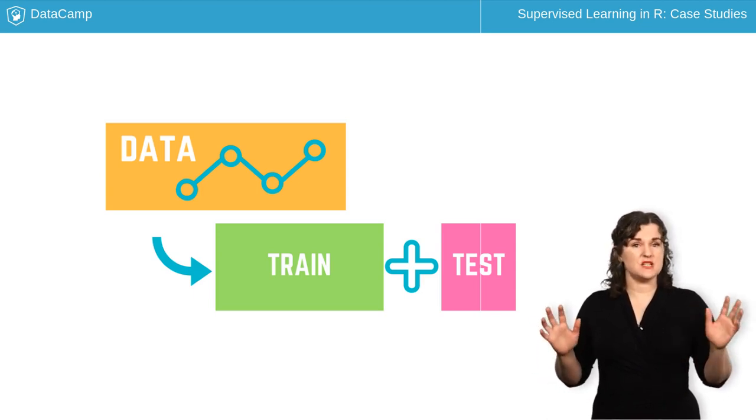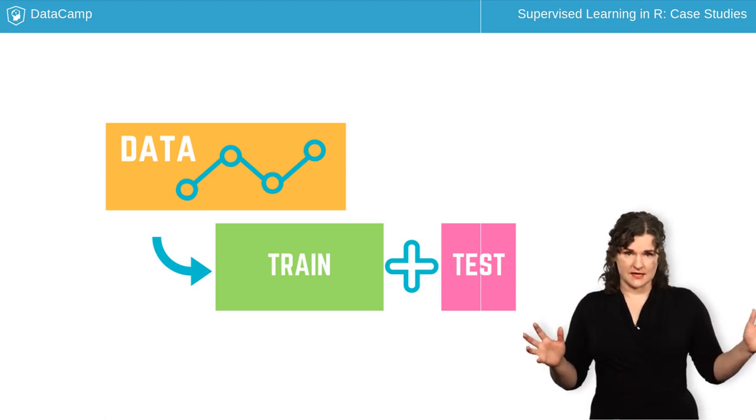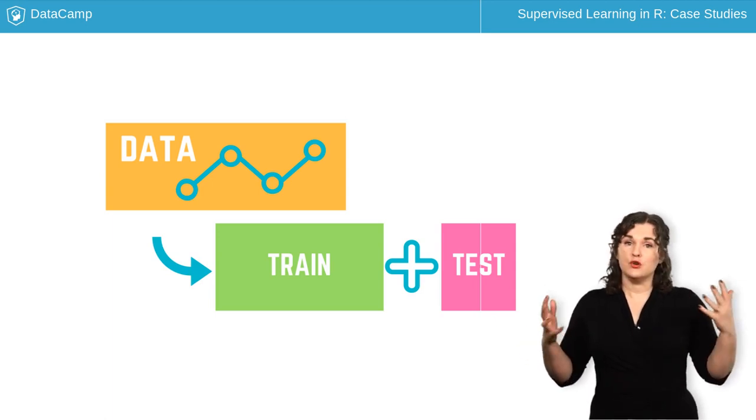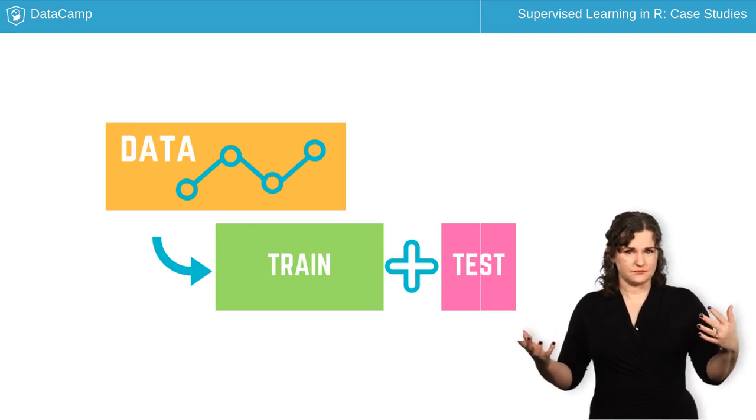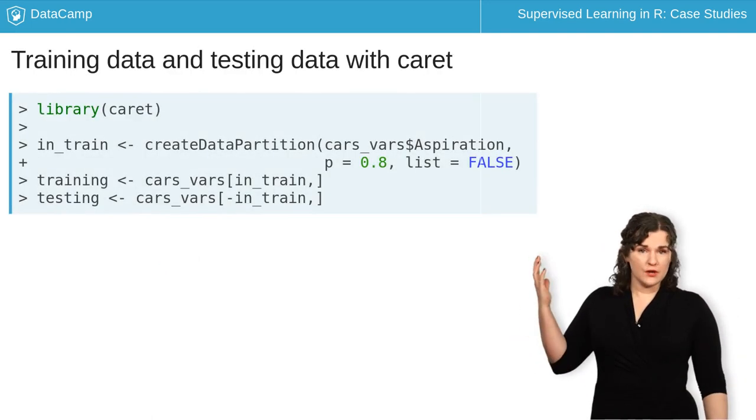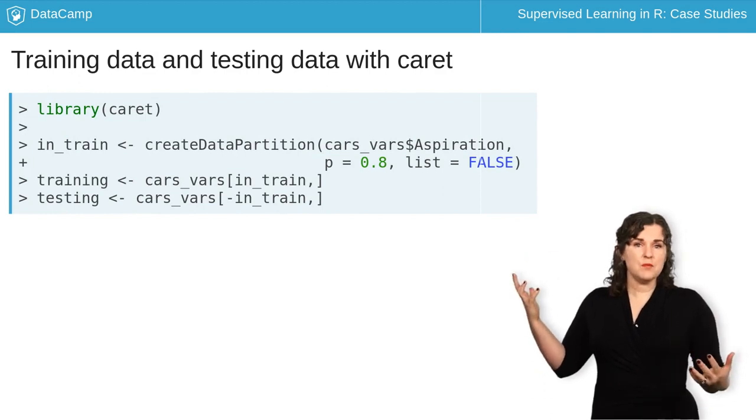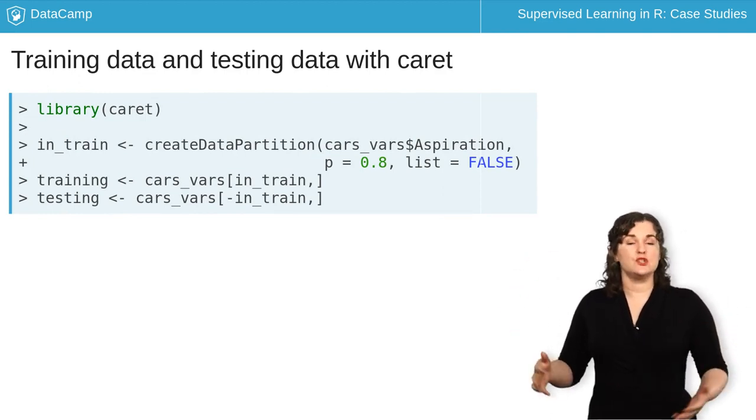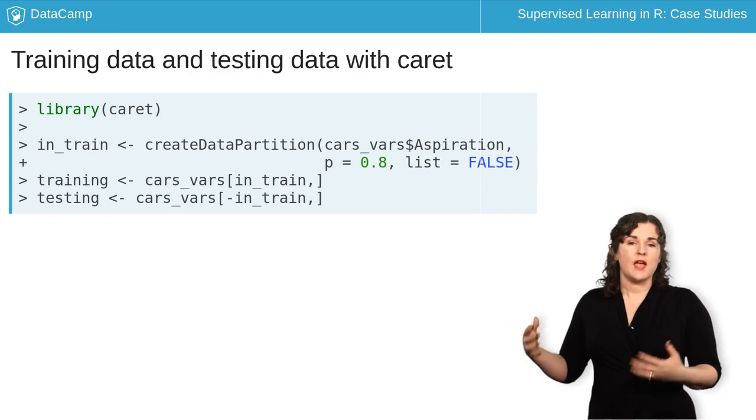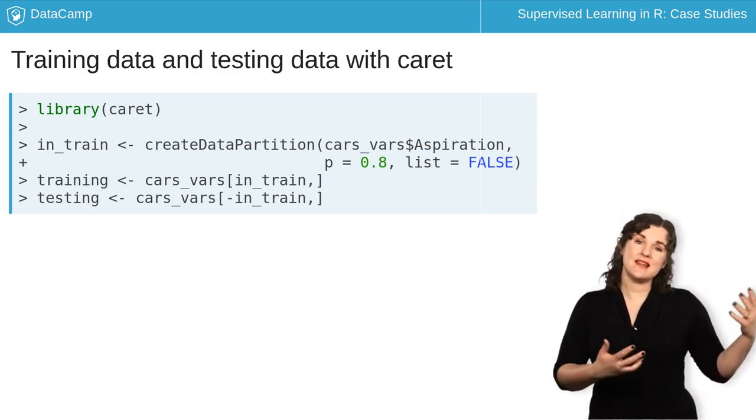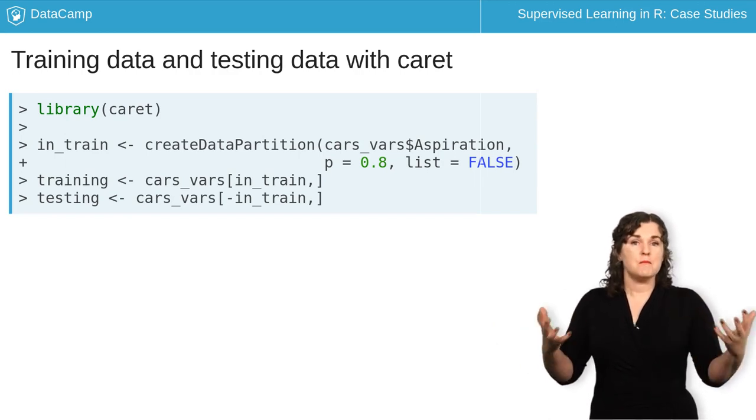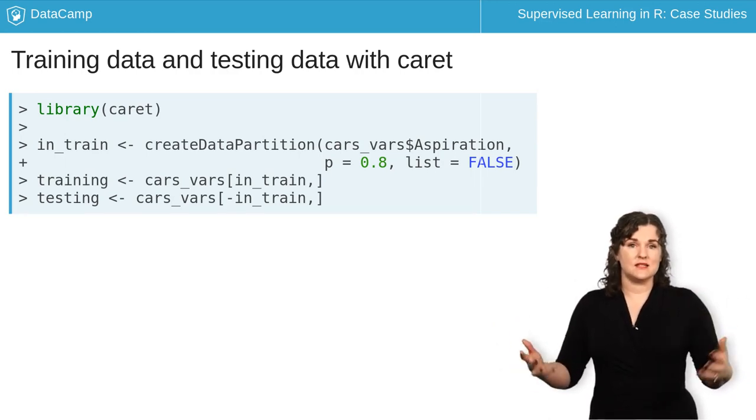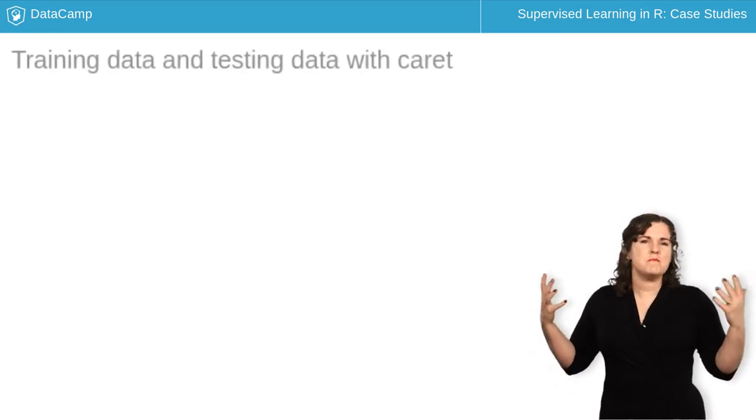Caret has functions that help you specify training and testing sets and you can create these so that they balance some characteristic in your data set. For example, the code here takes an input data set and puts 80 percent of it into a training data set and 20 percent of it into a testing data set. It chooses the individual cases so that both sets are balanced in aspiration types. So why are we bothering with this?